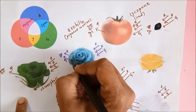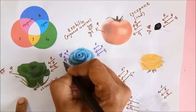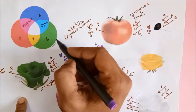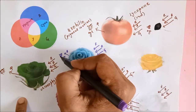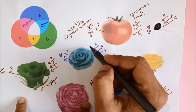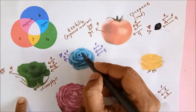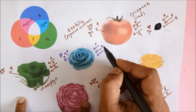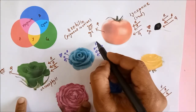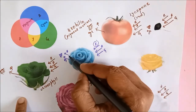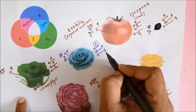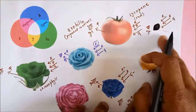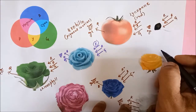Blue and green are reflected and finally they mix up in the midway and then they reach your eye. So the blue as well as green color appear cyan to you. In white light, the cyan rose appears cyan because the pigments absorb red color. When they absorb red color, red does not reach your eye, and blue and green come to your eye, so the color is cyan.